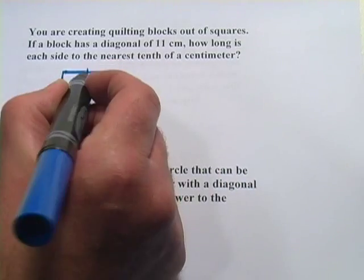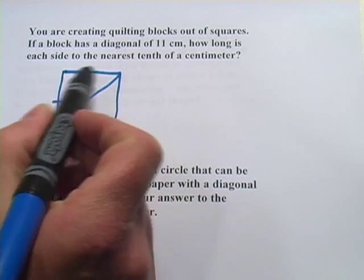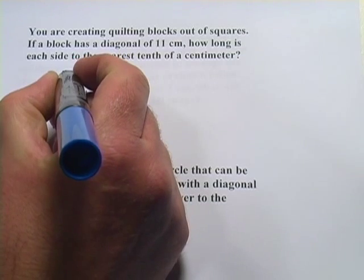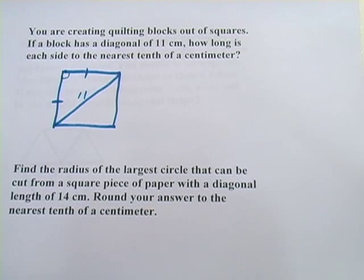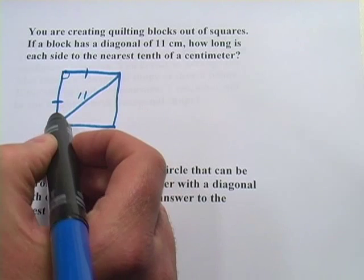So this is 11. And then these two sides are going to be the same. What you've got there is an isosceles right triangle because that's a right angle. And you should recognize that as our 45-45-90 triangle because these two angles are going to be 45 degrees.